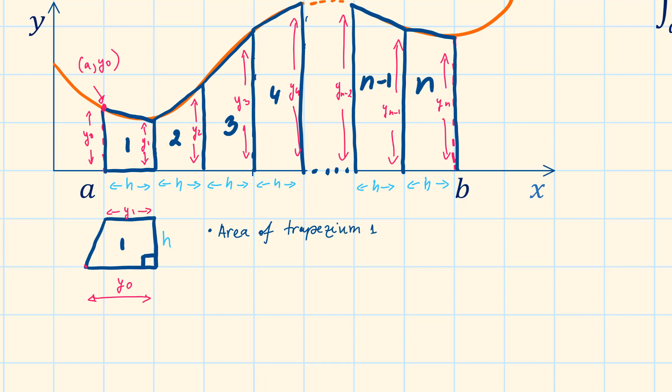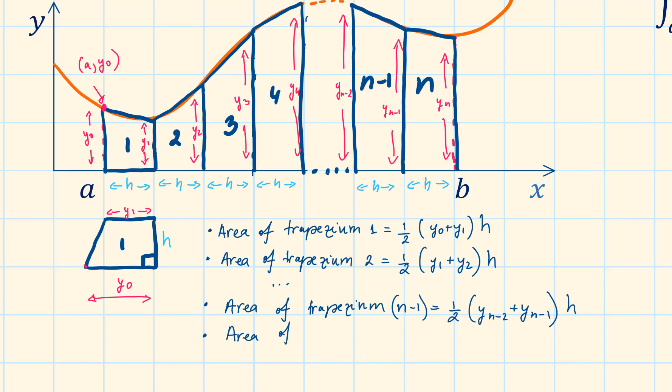The area of Trapezium 1 will be given by half times y0 plus y1 times h. Area of Trapezium 2 will be given by half times y1 plus y2 times h. Area of Trapezium n-1 will be given by half times yn-2 plus yn-1 times h. And finally the area of Trapezium n will be given by half times yn-1 plus yn times h.